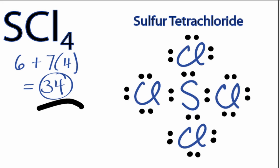So at this point in the Lewis structure for SCL4, we've used 32 out of the 34 valence electrons.